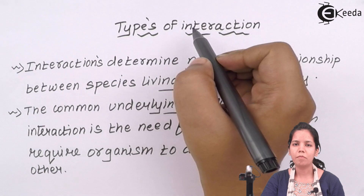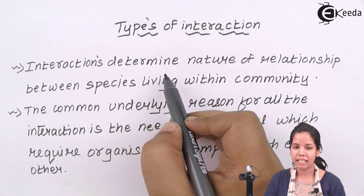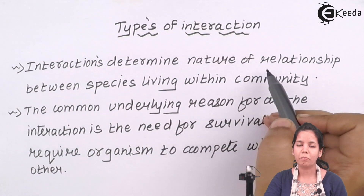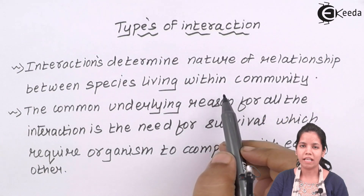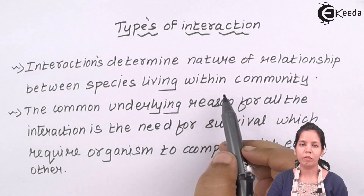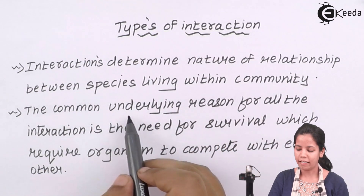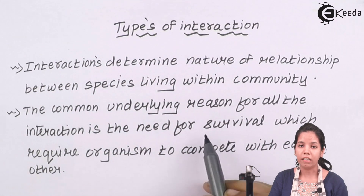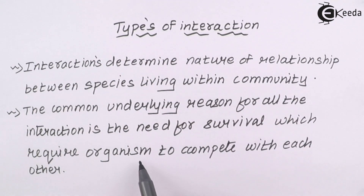Types of interactions: interactions between organisms basically determine the nature of the relationship those species have living in a community. For example, human beings living in a human community will interact with each other, whereas carnivores living in the jungle will interact among themselves. The common underlying reason for all these interactions is the need for survival — organisms need to constantly interact and compete with each other so as to survive.